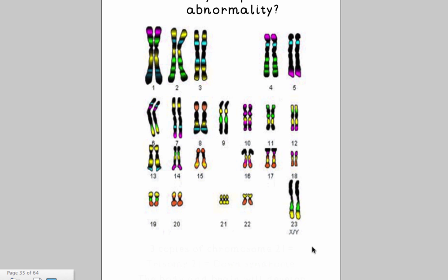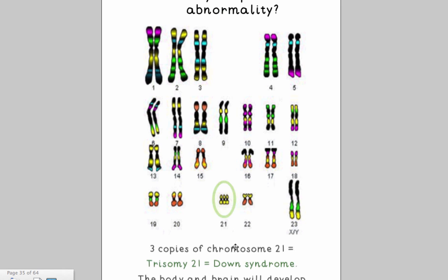Can you spot in here any abnormality? If you look carefully you will see that chromosome 21 actually doesn't have two — it has three. This is called nondisjunction, and nondisjunction happens when during the process of meiosis the chromosomes do not split correctly. So one more chromosome is given from the mother or from the father, and usually this happens at random. This gives us three chromosomes where we should have two in chromosome 21, causing trisomy 21, or Down syndrome, so the body and the brain will develop differently.